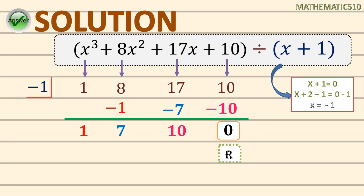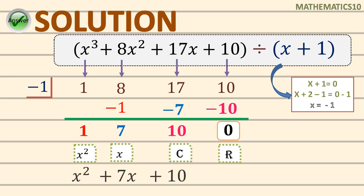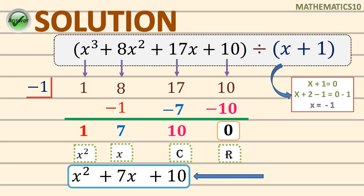If you are asked to find the depressed polynomial or depressed expression, just consider this pattern. If you have a remainder, next to that is our constant, then applying the pattern in increasing order: next to the constant is the linear expression, and next to that is quadratic or x squared. To make this a polynomial, you plug in the specific variable to each numerical coefficient. So 1 and x squared gives x squared; 7 and x gives 7x; and the constant is positive 10. Therefore, x squared plus 7x plus 10 is our depressed polynomial.